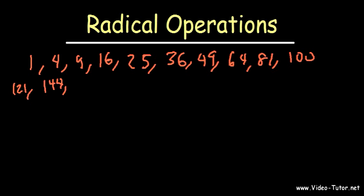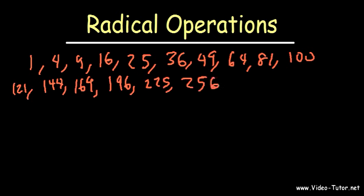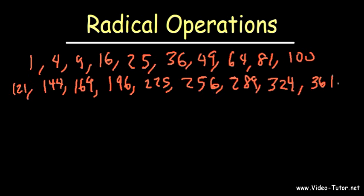We're going to go up to 20. 13 squared is 169, 14 squared is 196, 15 squared is 225, 16 squared is 256, 17 squared is 289, 18 squared is 324, 19 squared is 361, and 20 squared is 400.